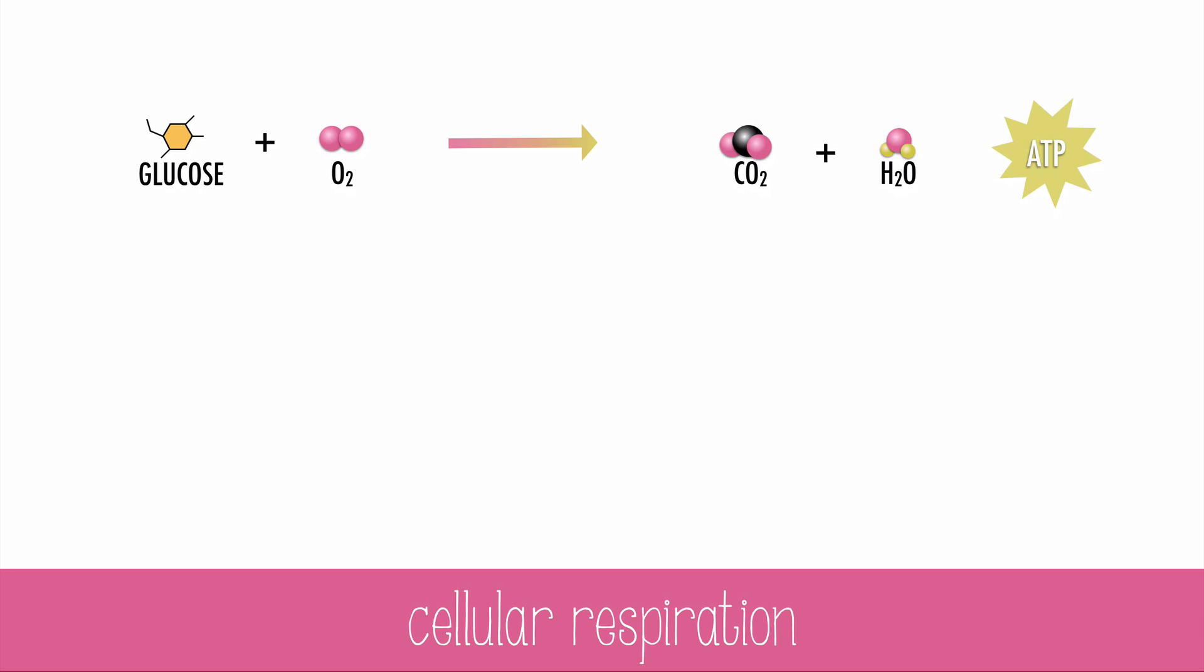When oxygen is present, cells can perform aerobic respiration. Aerobic means requiring oxygen. So this is your typical respiration cycle, and it makes a lot of ATP.